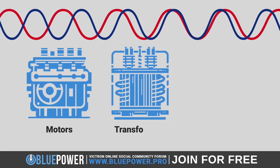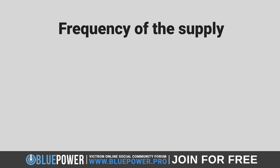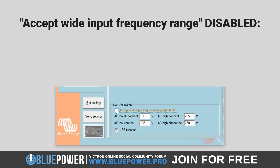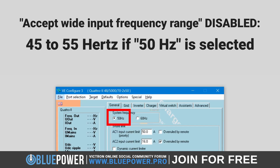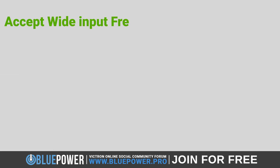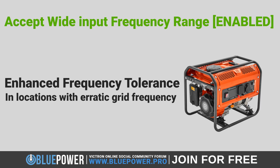This is beneficial in scenarios where the power source does not consistently maintain a standard frequency. For example, portable generators often experience frequency shifts as their engine speeds vary under different load conditions. This variability is more pronounced with conventional generators, as opposed to inverter-type models. If the Victron inverter charger is configured to only accept a narrow, standard frequency band, it might not accept power from a generator that oscillates around the ideal 50 Hz or 60 Hz frequency. In summary, this enhanced frequency tolerance is particularly advantageous in locations with erratic grid frequency or in conjunction with generators that lack frequency stability.